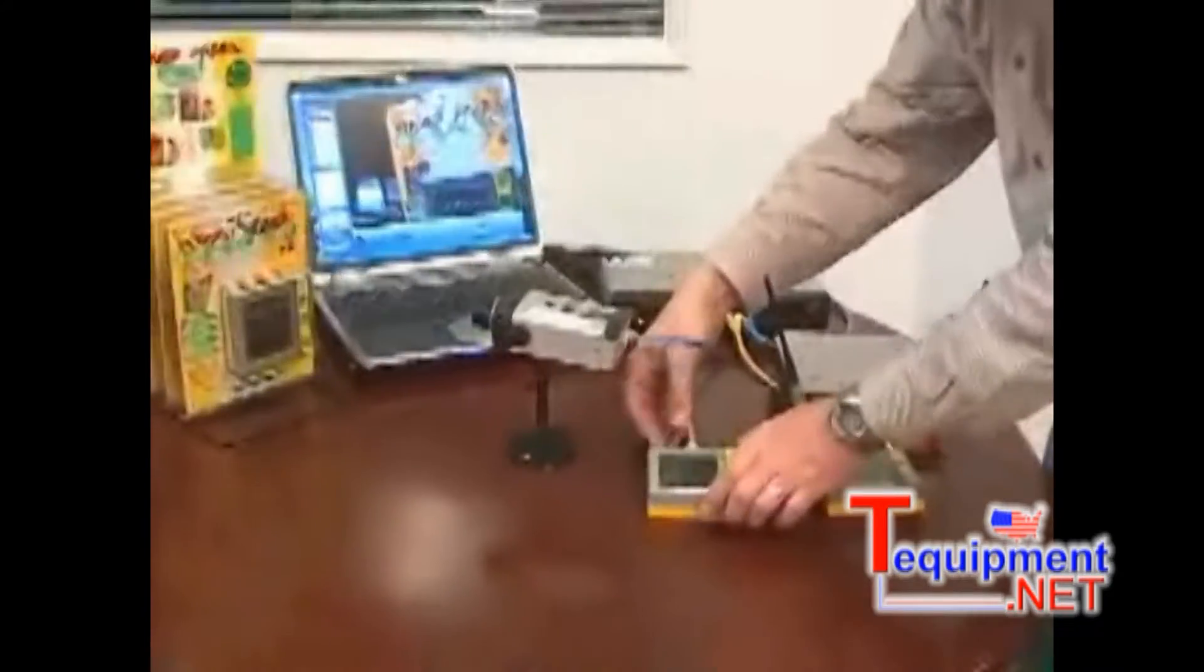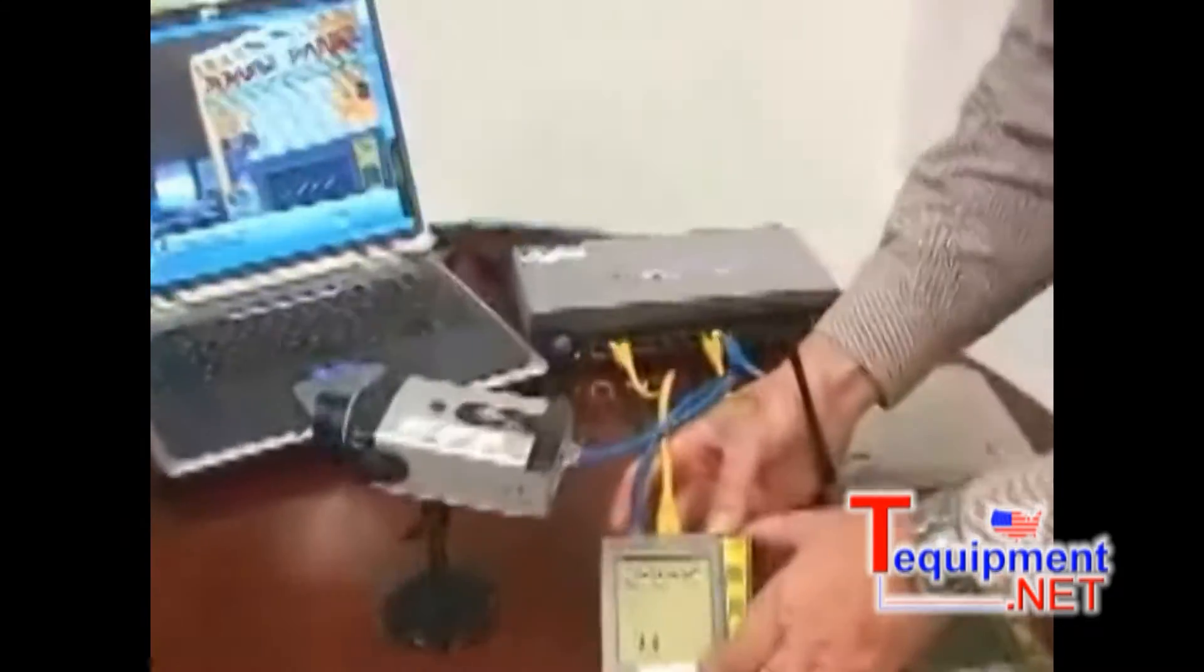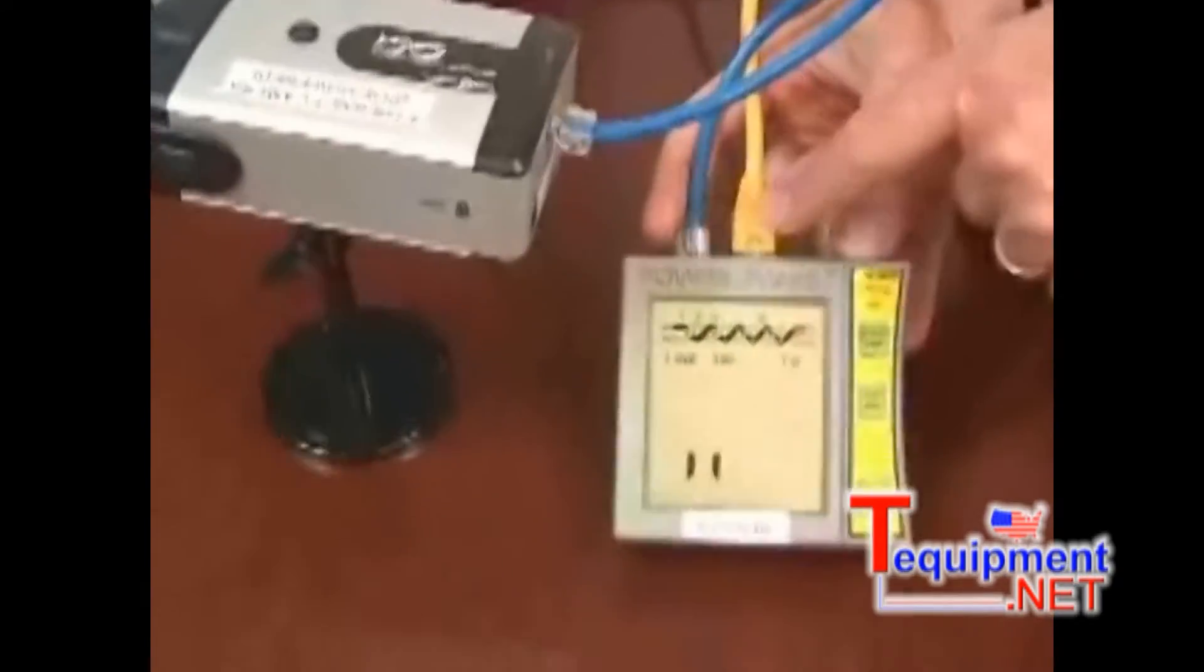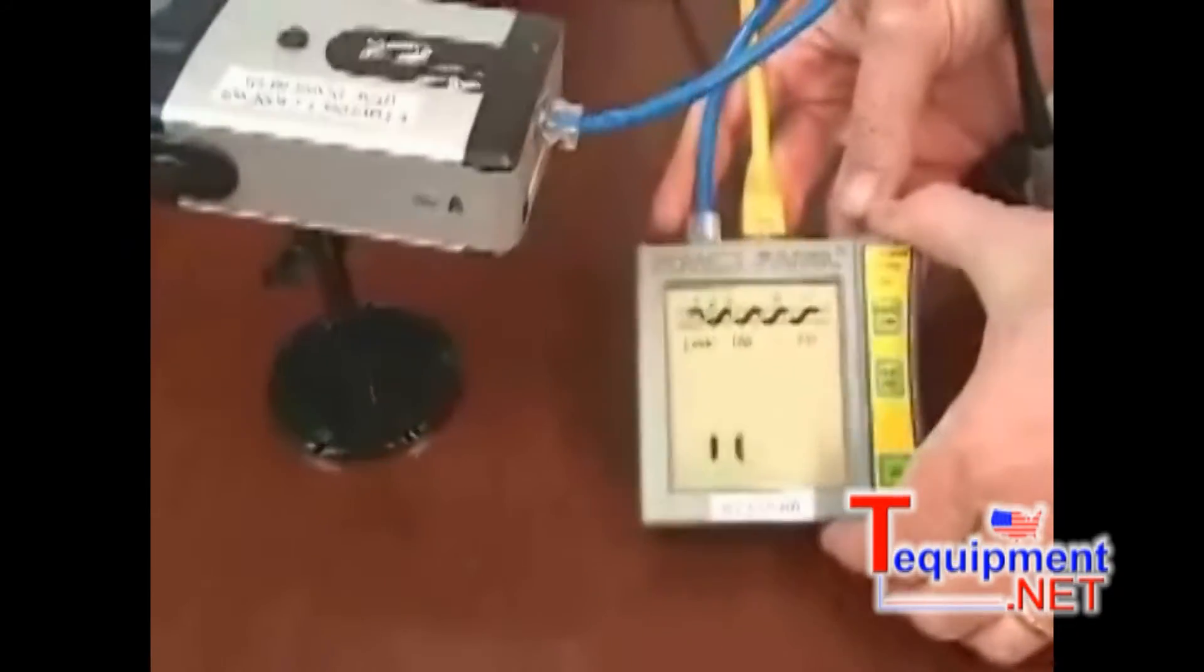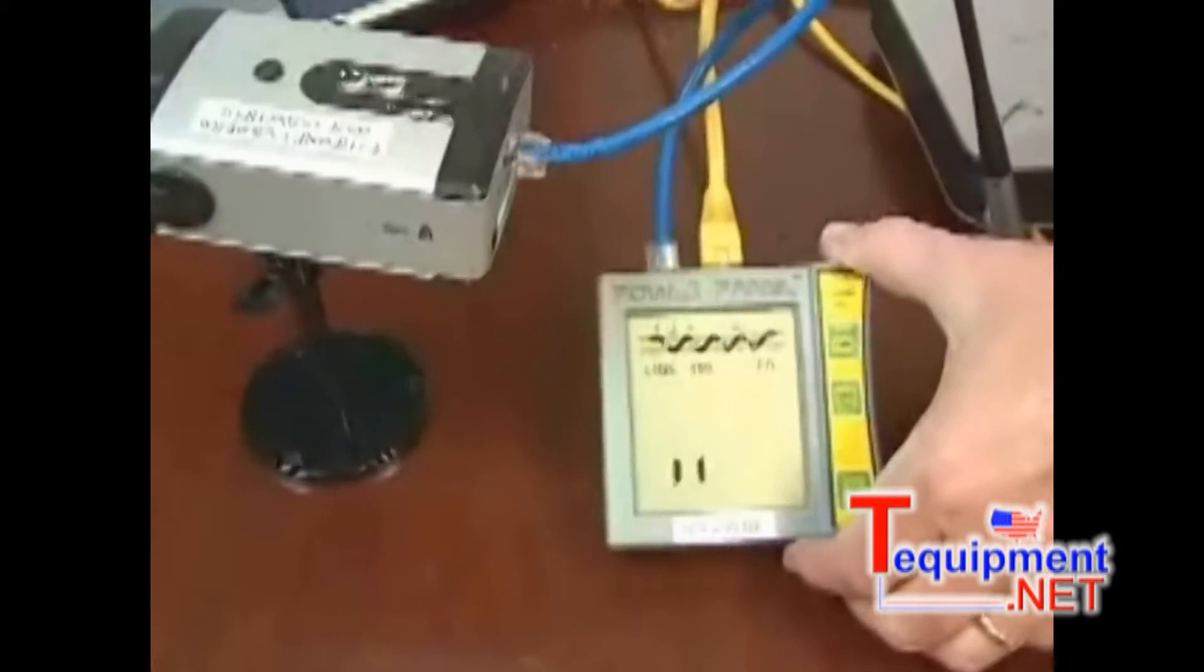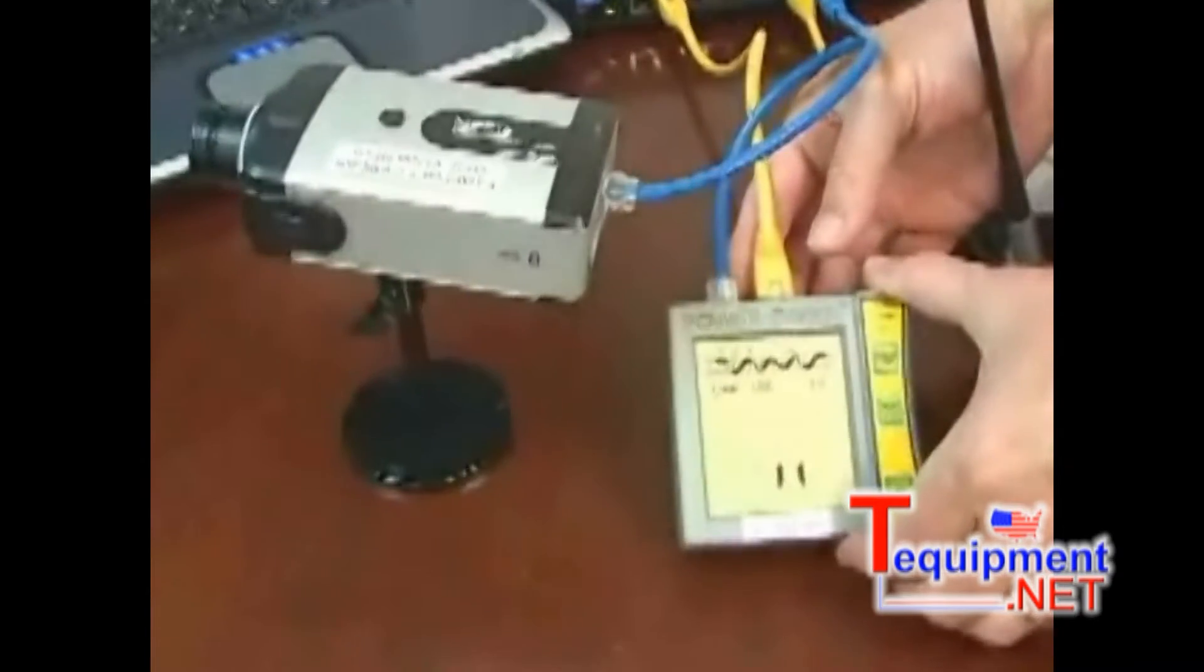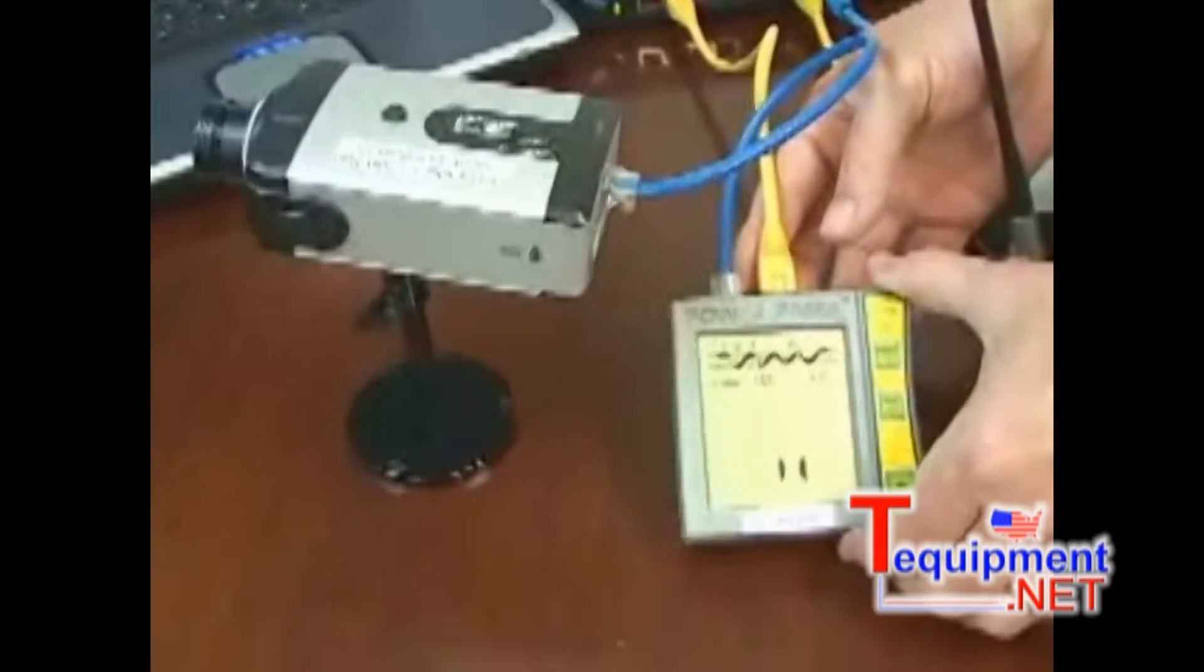This video focuses on the inline version of the power panel. We call it an inline version because it has two jacks and allows you to go in between a switch that's driving the PoE device and the PoE device itself. This gives you some remarkable additive testing power that's not available in the single jack unit.